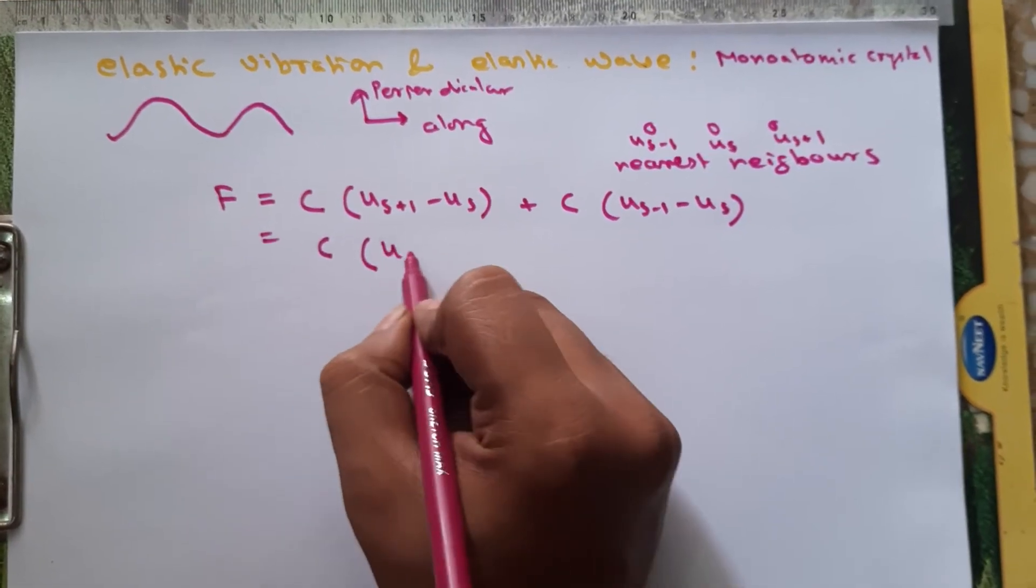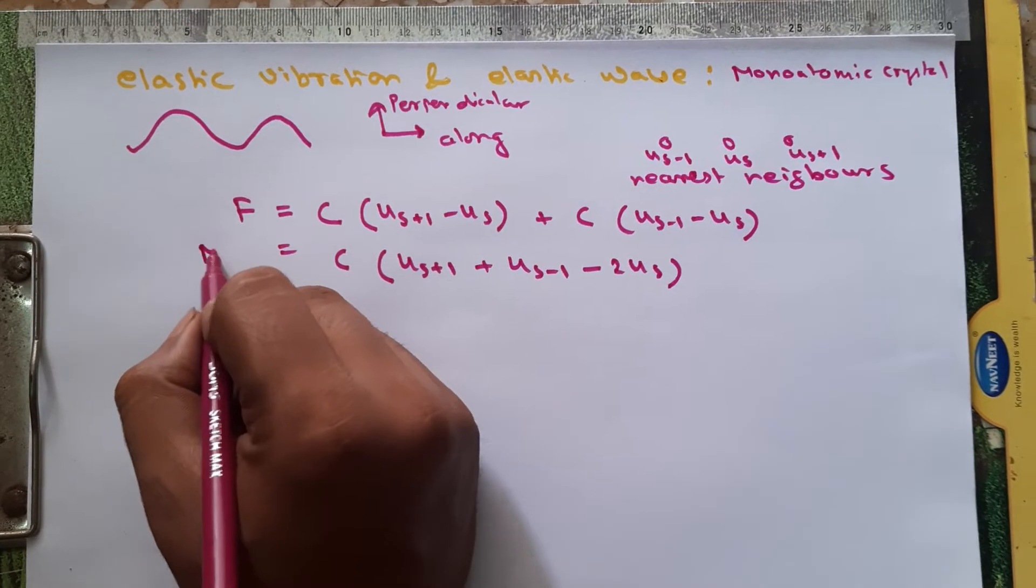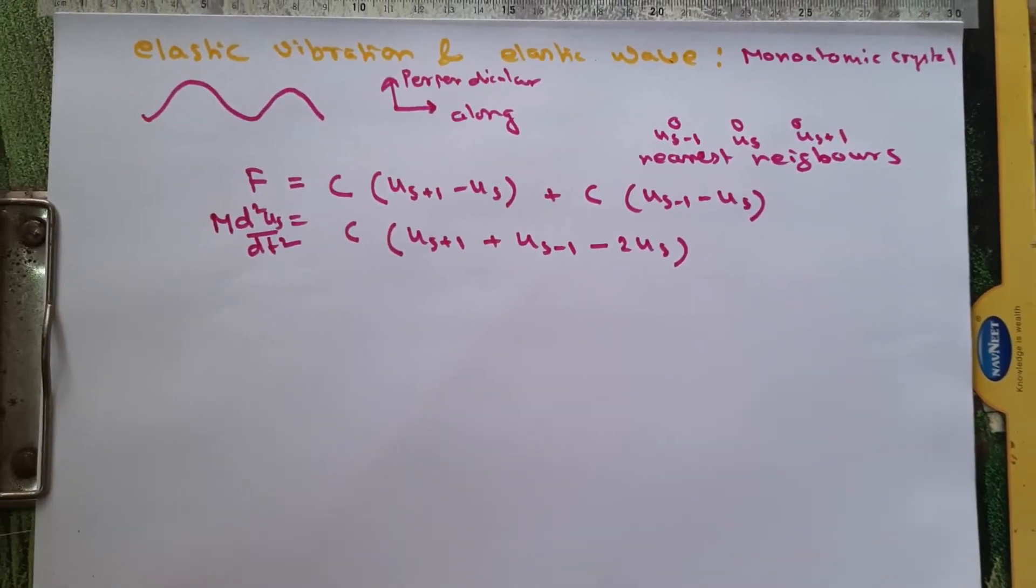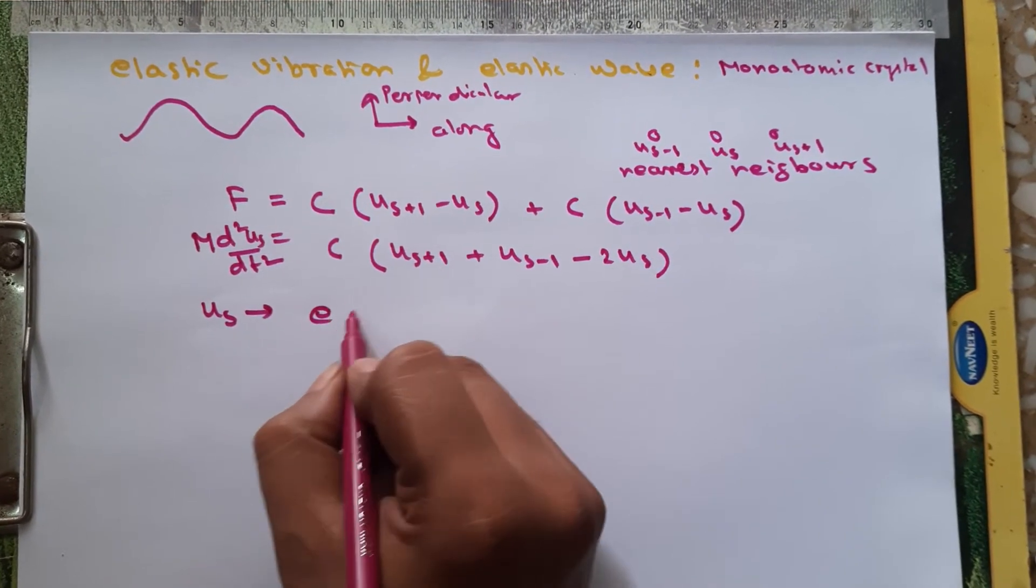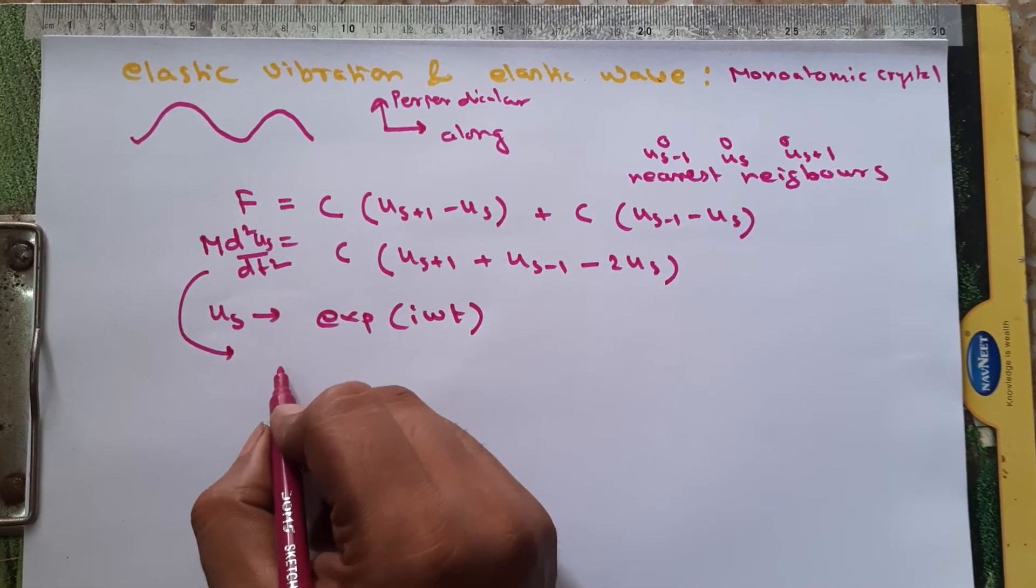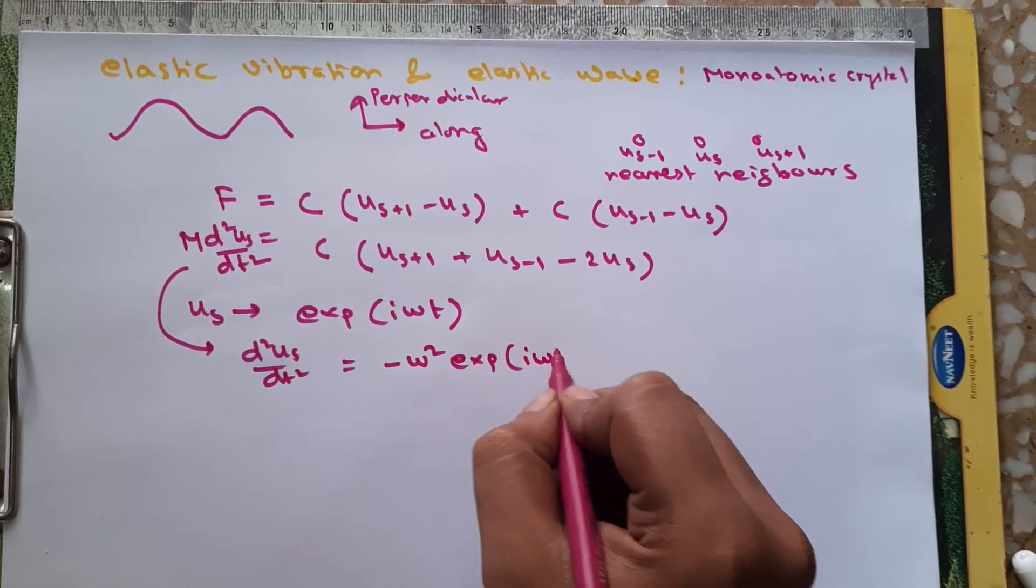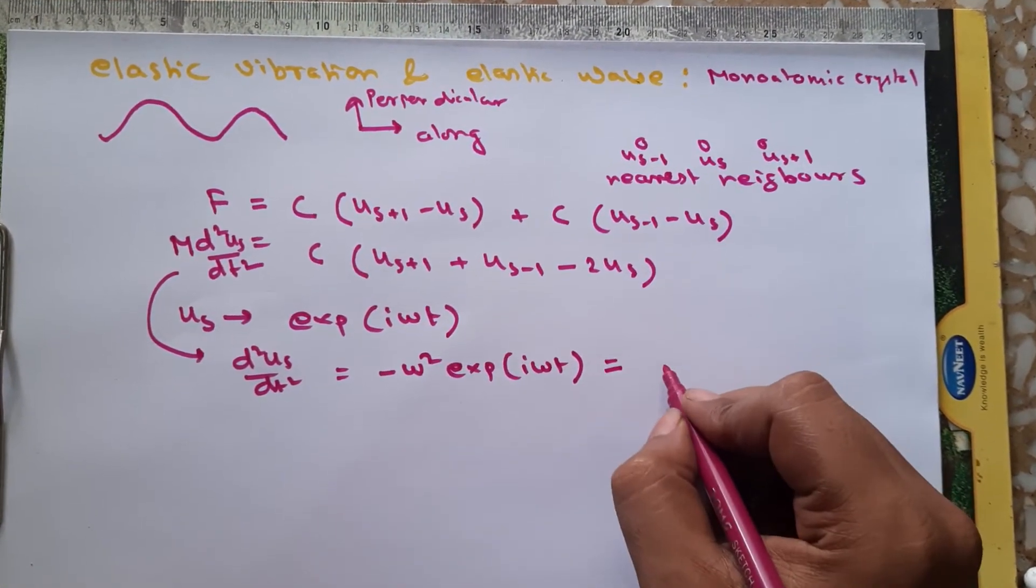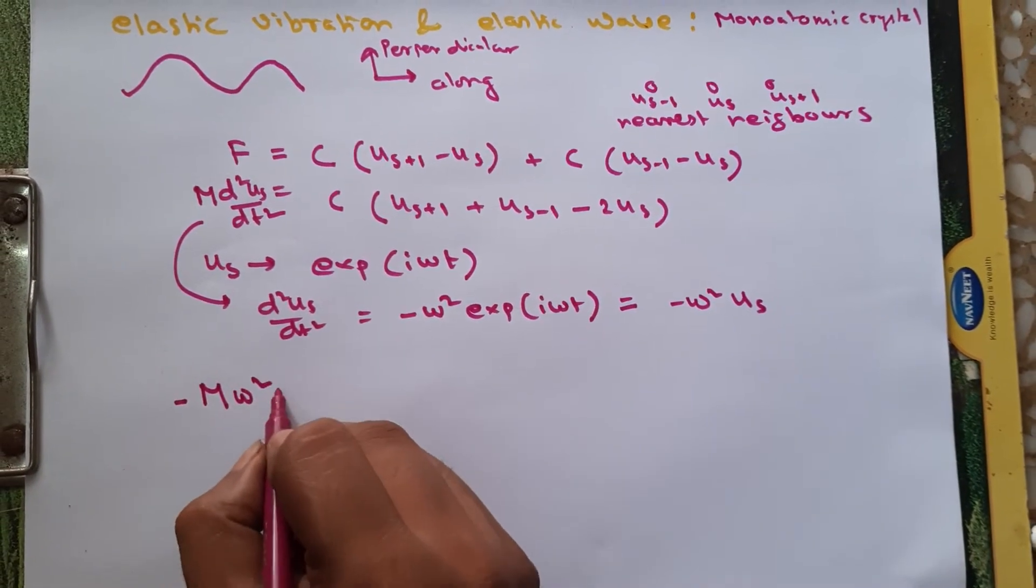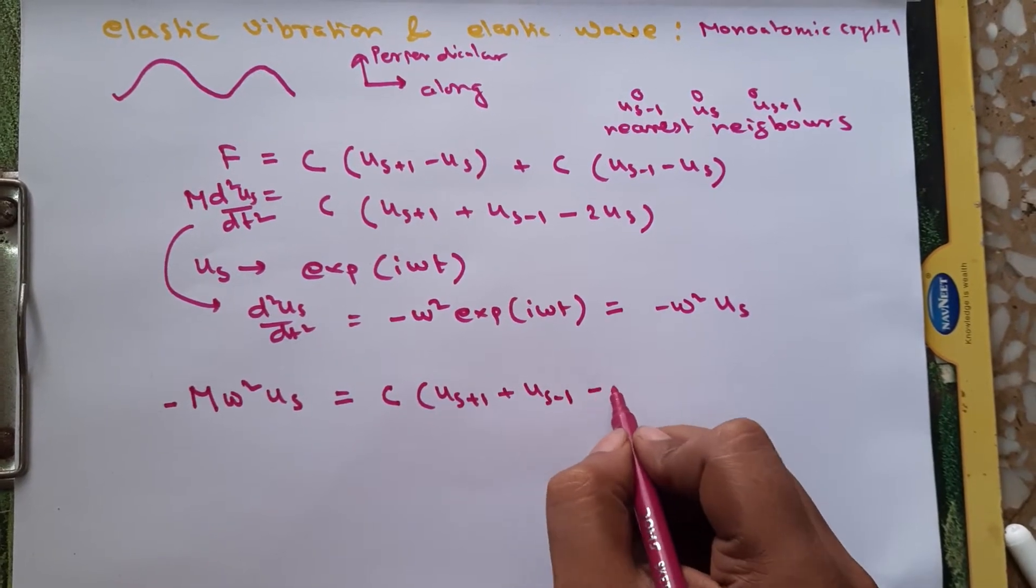So that is C(u_{s+1} + u_{s-1} - 2u_s), and this force can be written as M d²u_s/dt². Now this u_s solution has a time dependence of exponential(iωt). So this term will become d²u_s/dt² = -ω² exponential(iωt), or you can say -ω²u_s. So if we put it back in here we get Mω²u_s = C(u_{s+1} + u_{s-1} - 2u_s).